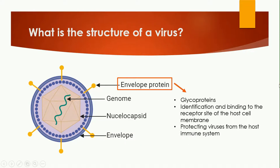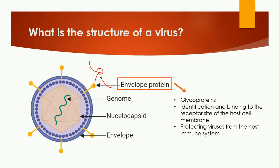Another structure is the envelope proteins — you can see the spike-like parts here. These envelope proteins are made up of glycoproteins. Their purpose is identification and binding to the receptors of the host cell membrane. The envelope proteins identify the receptors on the host cell membrane and allow the virus to land on that cell. Another function of the envelope proteins is to protect the virus from the immune system of the host.